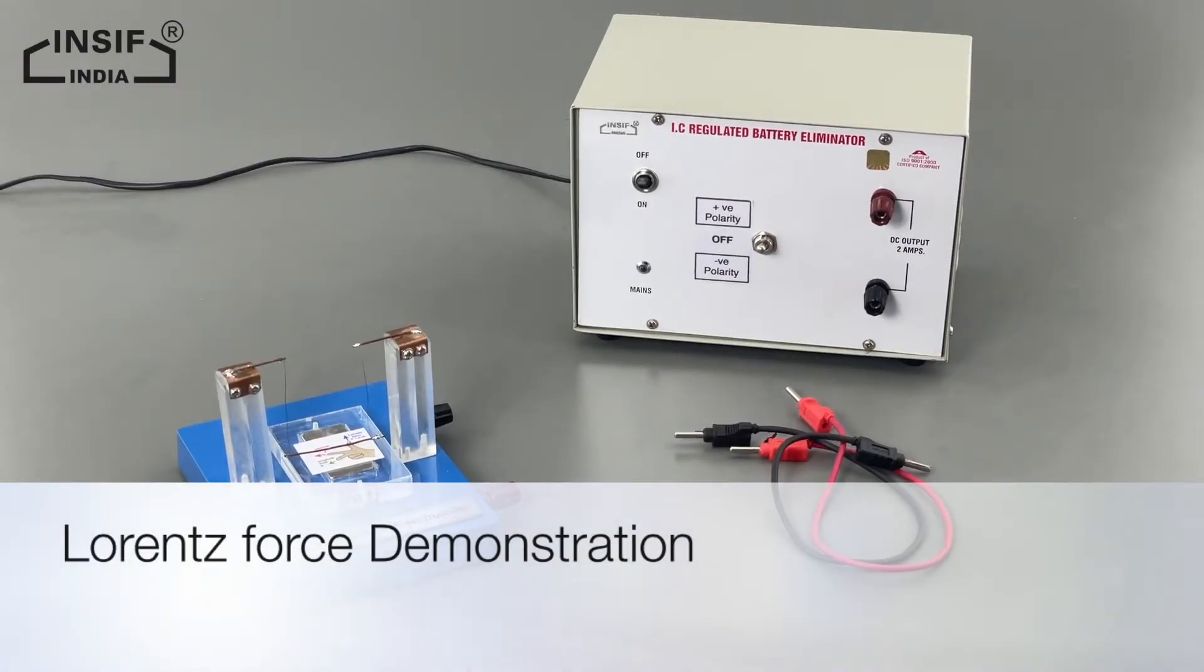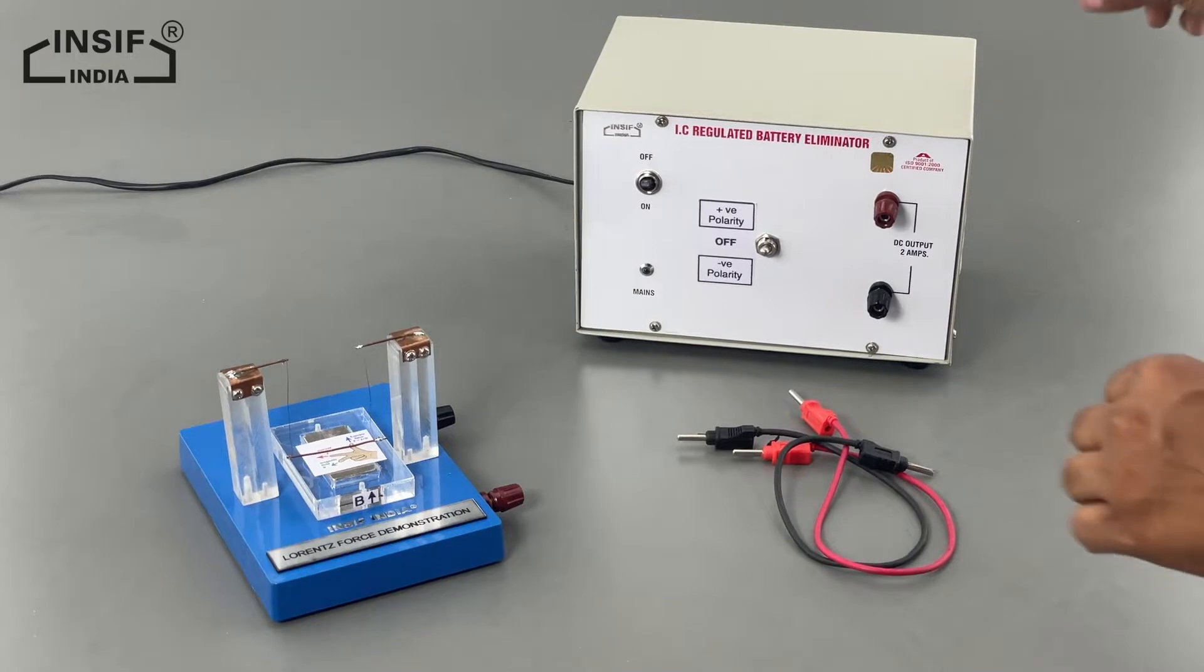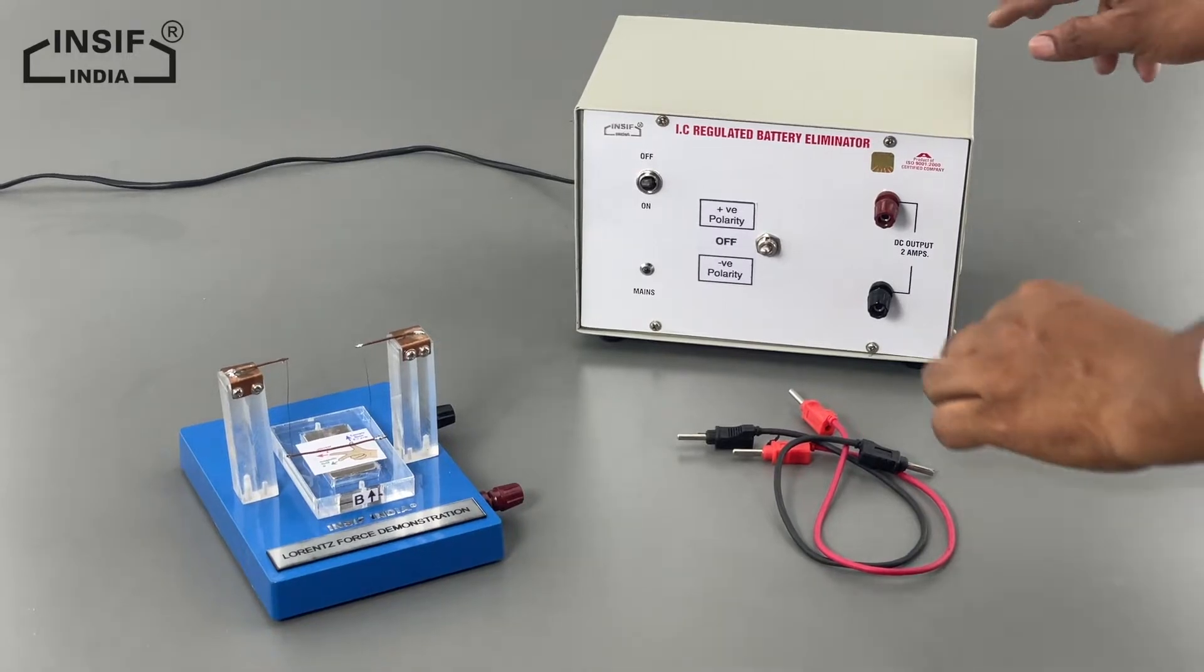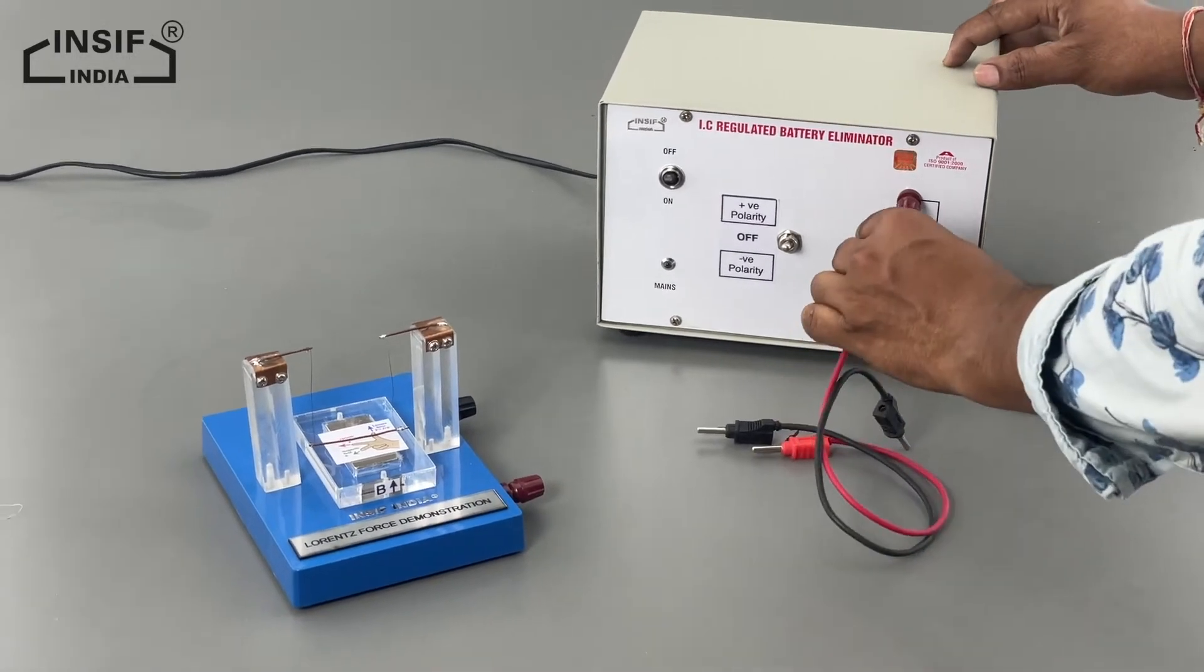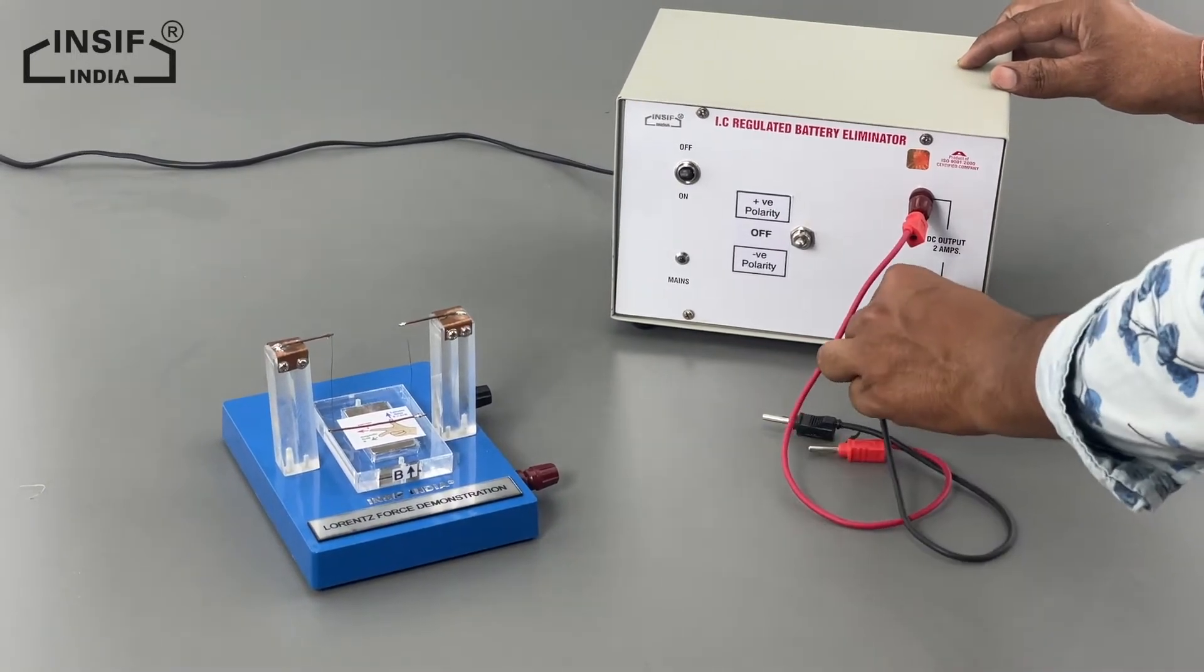Lorentz force: the force exerted on a charged particle Q moving with velocity V through an electric field E and magnetic field B. The entire electromagnetic force F on the charged particle is called the Lorentz force.